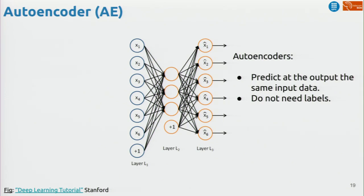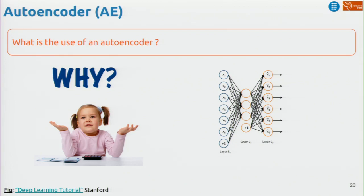Have you ever seen autoencoders in this master? In case you weren't there or don't remember: an autoencoder is an architecture where you have some input data — think of it as your image — and the output you want to predict is exactly the same image. You only have one hidden layer in this example, but we can have as many layers as we want.